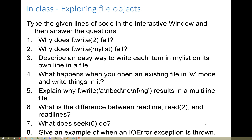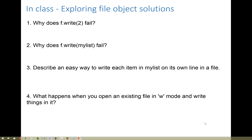Now we'll go over the answers to the questions posed during the interactive exercise. Why does f.write(2) fail? The write method requires string input. 2 is an integer, not a string. If we wanted to write the number 2 into a file, we can do that, but we have to cast it to string first or put quotation marks around it.